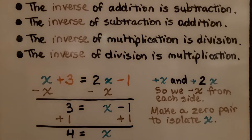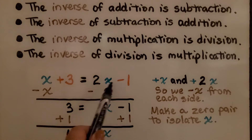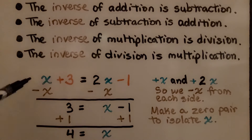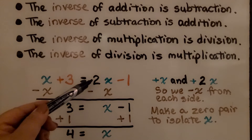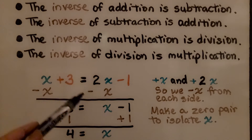Here we have an equation: x plus 3 is equal to 2x minus 1. This is a positive x, and this is a positive 2x. We just don't write that plus sign in front of it — we only do it when it's a negative.